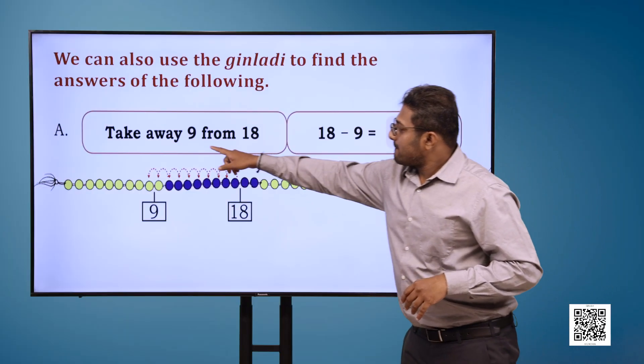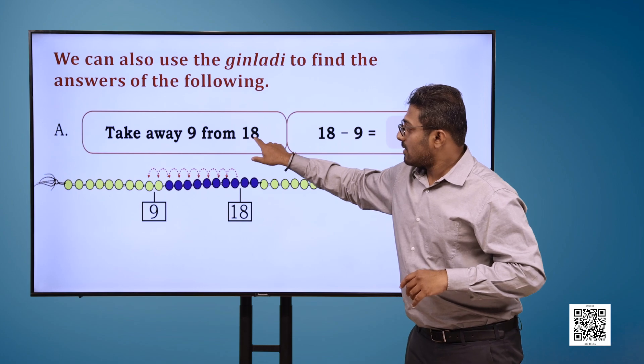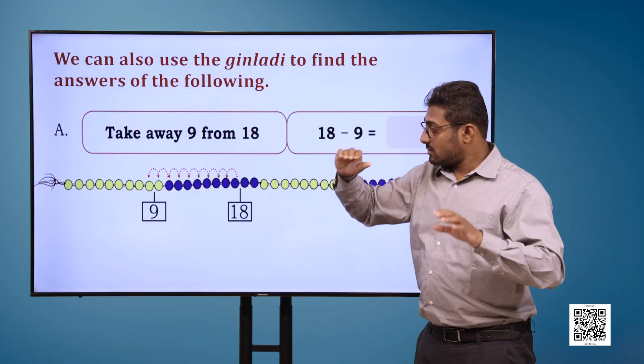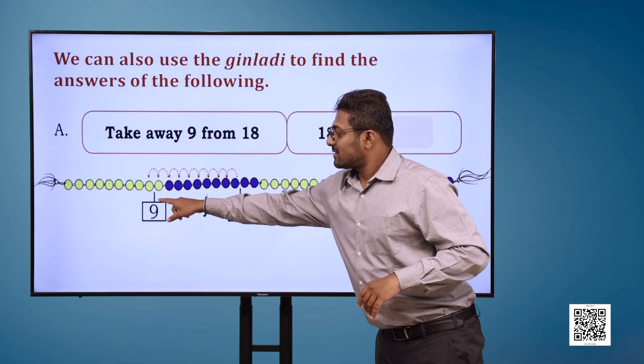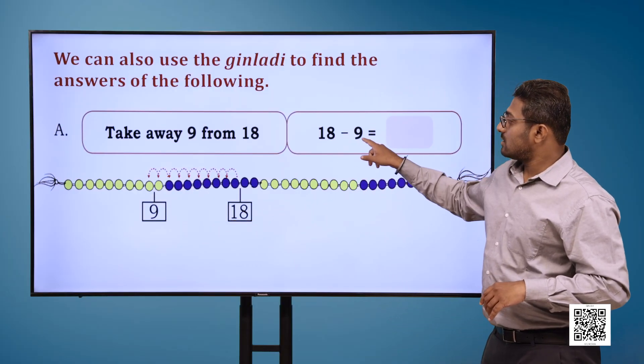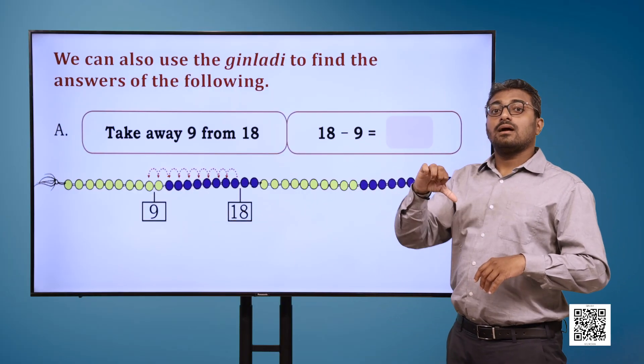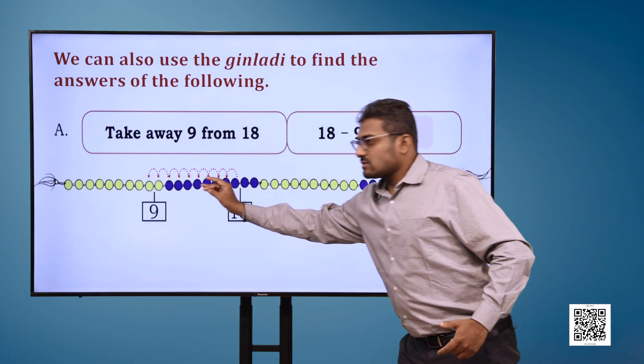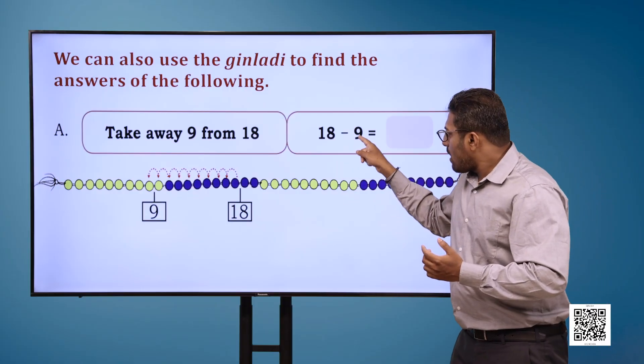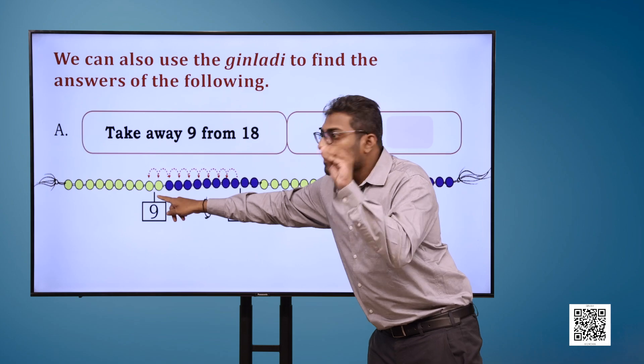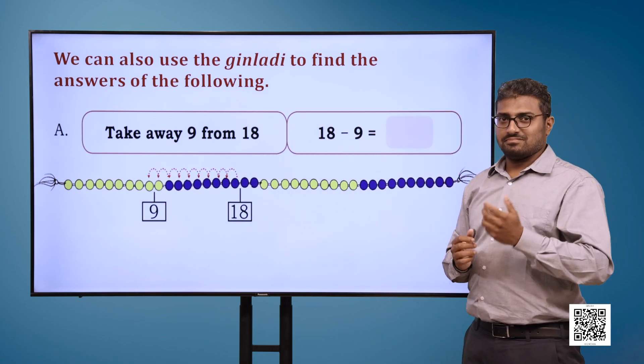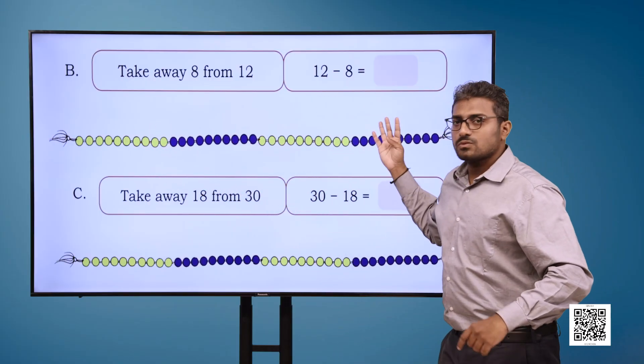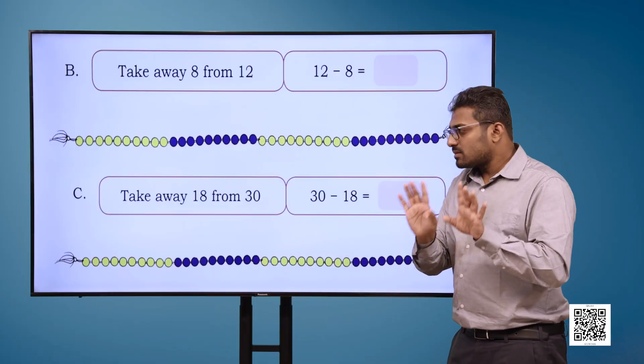A. Take away 9 from 18. That is 18 minus 9 is equal to blank. Now on the ginlari, if we go 9 beads backwards from 18, we will arrive at 9. Take away 8 from 12, that is 12 minus 8 equals to blank.